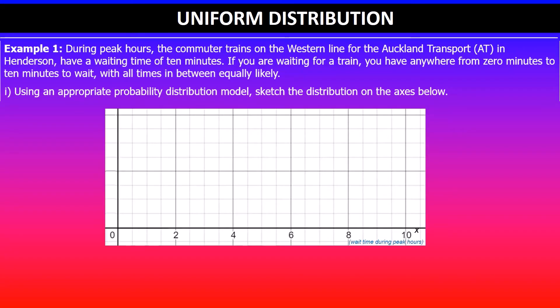In this case, random variable X is the wait time during peak hours, and the probability distribution function is f(X). We're only given two parameters, minimum and maximum, so we've got a minimum value of zero and a maximum value of 10. We have a and b values given as the maximum and minimum, and we know that the wait times are equally likely.